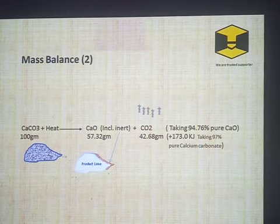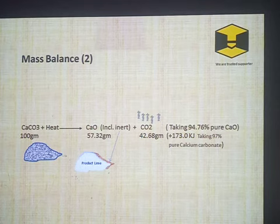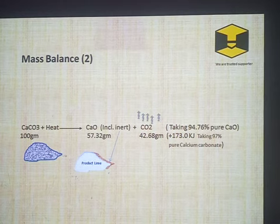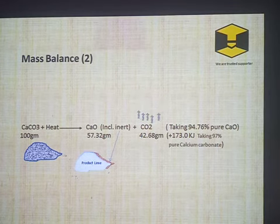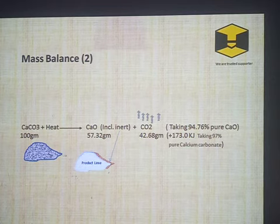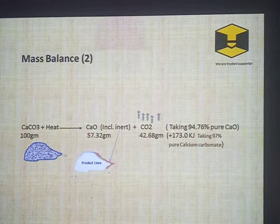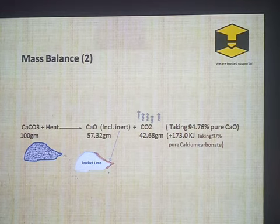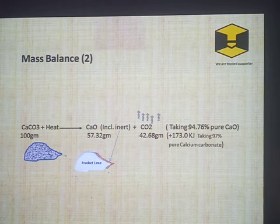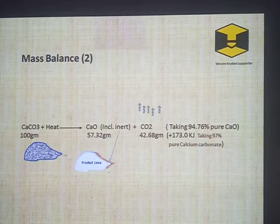In Reaction Case 2, 100 grams of reactant with 97% CaCO₃ content decomposes into 57.32 grams of calcium oxide and 42.68 grams of carbon dioxide. We have taken the raw material as tabulated — 97% calcium carbonate, with the remaining being inert that does not take part in the reaction. So even though this reaction is also 100 percent complete, you cannot achieve a purity greater than 94.76 percent. Energy requirement here is 173.0 kilojoules.